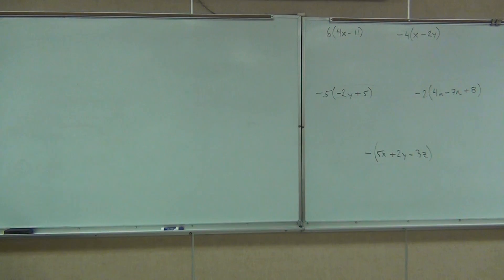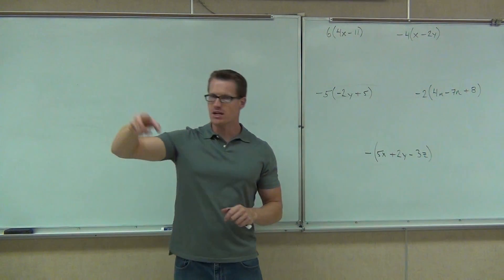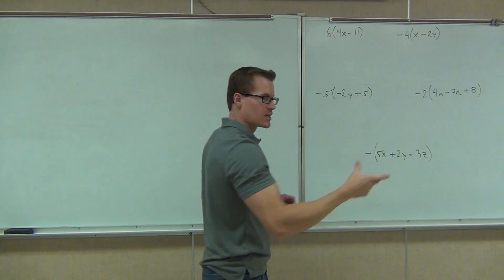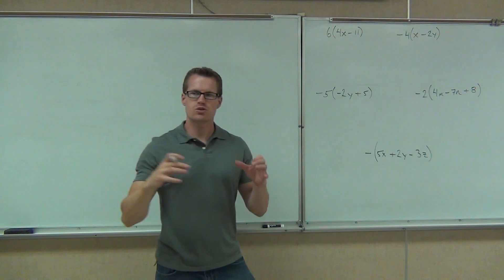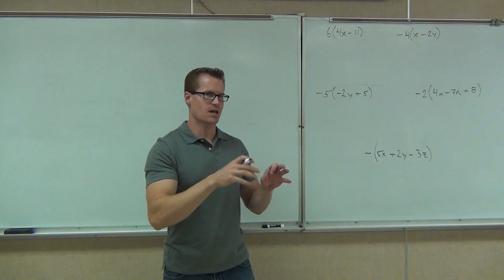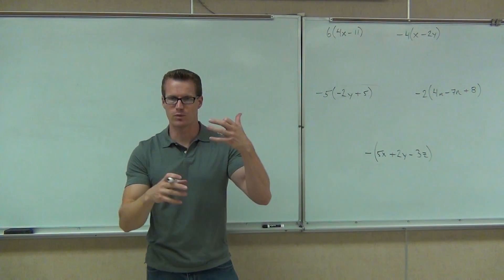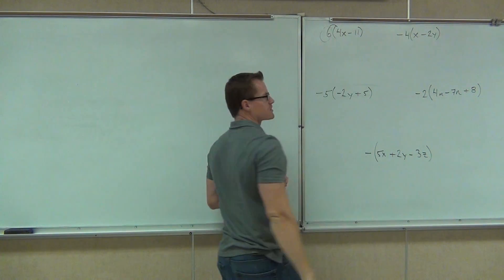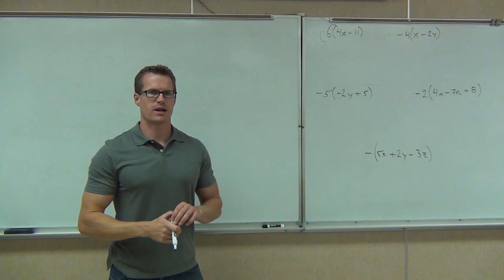Okay, we're about to get started up here. So we're distributing — we're taking the value outside of our parentheses times each of the terms inside. First one, we're distributing the six. It just has to be multiplied by both of those terms. As long as you take the number with the sign and multiply those two things, the signs will take care of themselves. So our six times our 4x — what's six times 4x? 24x. So we're going to write out 24x.